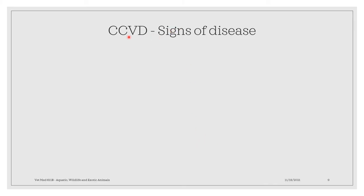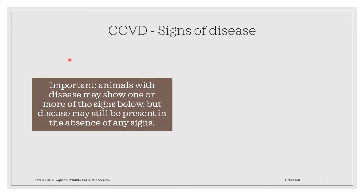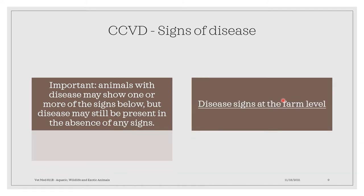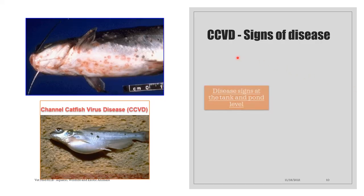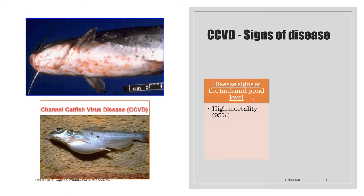What are the signs of the channel catfish virus disease? An important consideration for CCVD is that animals with disease may show one or more of the signs we are going to discuss. But the disease may still be present in the absence of any visible signs. The disease signs at the farm level include high mortality in fry and juvenile catfish. At the tank and pond level, high mortality can reach up to 95%.